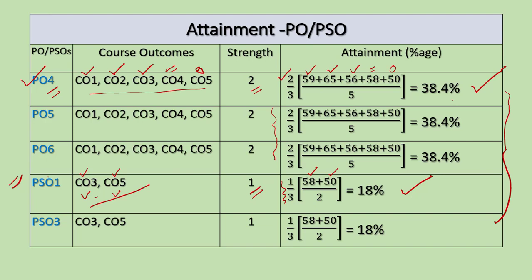This way, we have calculated the attainment level of POs and PSOs related to only one course having five COs, where these five COs address three POs and two PSOs.